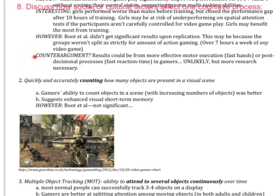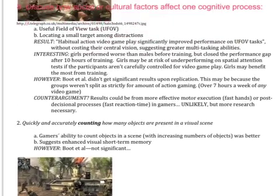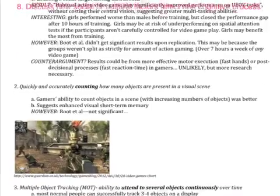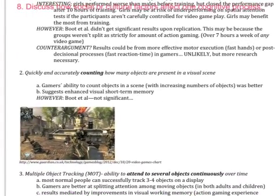One other counter-argument that could explain the study results without attributing them to better attention is that maybe participants performed better on the useful field of view task simply because of more effective motor execution — their hands are just faster at pressing buttons — or post-decisional processes like reaction time. Maybe they pay attention the same way, but their hands or reaction times are faster. However, the researchers say this is unlikely because they tried to control for it, though more research is definitely necessary.